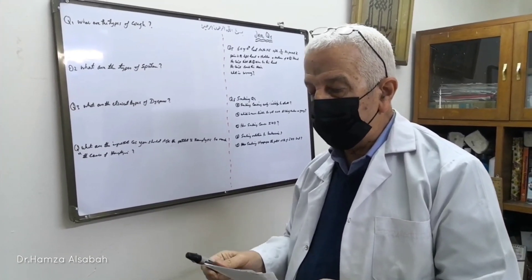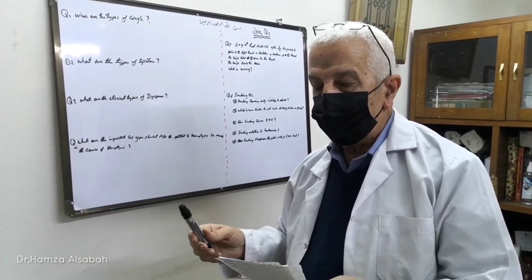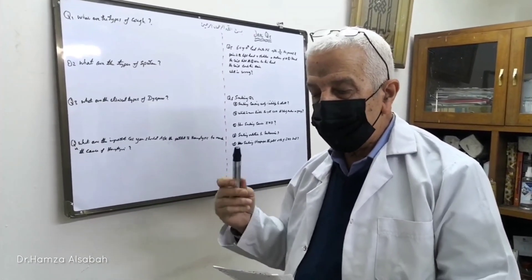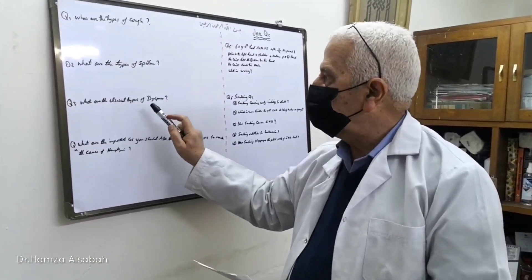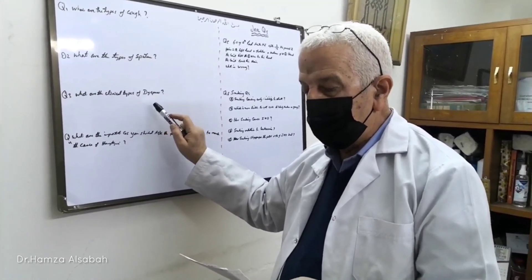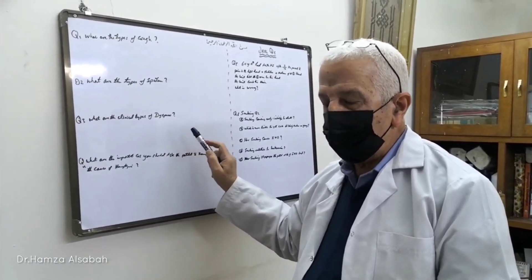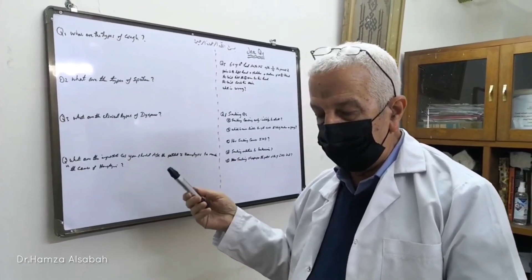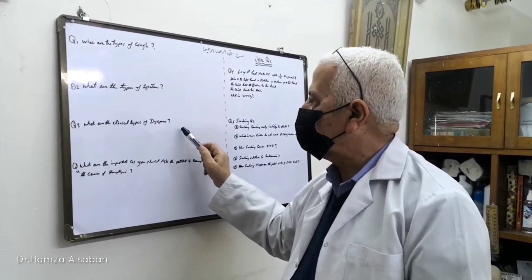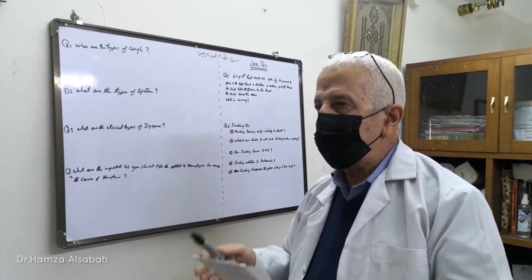Dyspnea improving or unchanged on exercise is psychological in origin. The fifth type is dyspnea worsening in the afternoon or evening and improving on a holiday or weekend — this is hypersensitivity pneumonitis due to an antigen at work. It induces a type 2 immune reaction which takes six to eight hours to produce dyspnea. The best example is occupational asthma in cotton workers.